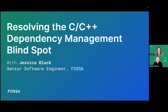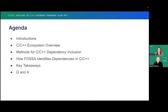We'll be happy to take questions throughout the presentation, so feel free to drop questions into the Q&A at any point. We'll try and take as many of them as we can in real time, and we'll get to the ones that we can't in the Q&A at the end. So let's take a look at our agenda. We're going to start with a quick overview of the C and C++ ecosystem, then look at various methods for including dependencies — including vendoring, static linking, and dynamic linking. Then we'll dig deeper to see how FOSA identifies those dependencies, and we'll wrap up with Q&A.